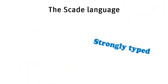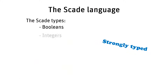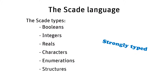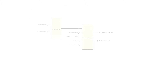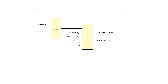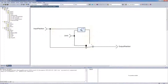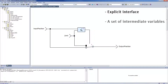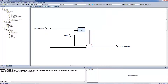The SCADE language is strongly typed. The types are booleans, integers, reals, characters, enumerations, structures, arrays, and the typing discipline can be checked by tools. The SCADE Suite tool allows implementing the HLRs at the architecture level and the LLRs at the operators level. Each operator is a functional module with an explicit interface, a set of intermediate variables, and a set of equations. The SCADE Suite editor provides the developer with expressive module libraries that simplify intricate operations and manipulations.